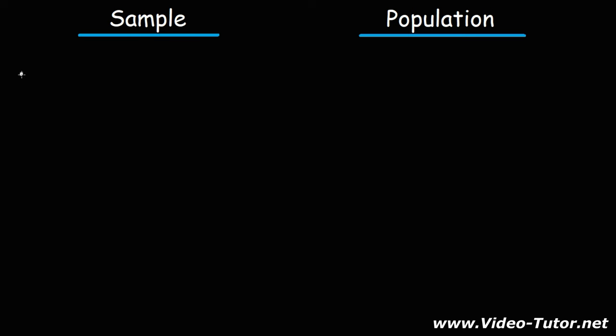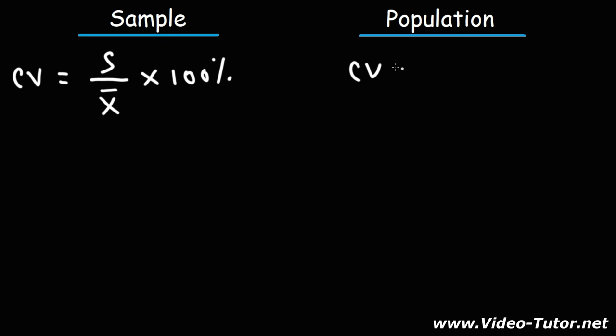Let's talk about the coefficient of variation. In order to calculate it for a sample, the coefficient of variation is going to equal the sample standard deviation divided by the sample mean times 100%. For a population, the coefficient of variation is going to equal the population standard deviation divided by the population mean times 100% if you want to express it as a percentage. So the coefficient of variation is basically the ratio between the standard deviation and the mean. If you have a coefficient of variation of 20%, that means the standard deviation is 20% of the mean.